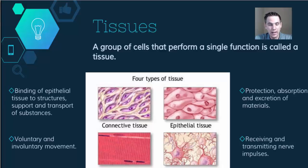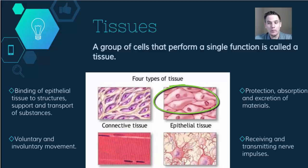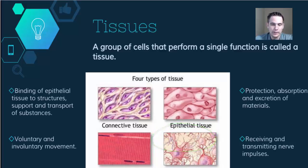There are four types of tissue. There's binding or connective tissue. There's muscle tissue, which controls voluntary and involuntary movement. There's epithelial tissue, which has to do with protection, absorption, and excretion — or pushing out of materials. And then there's nervous tissue, made up of specialized cells whose function involves receiving and transmitting nerve impulses or messages.